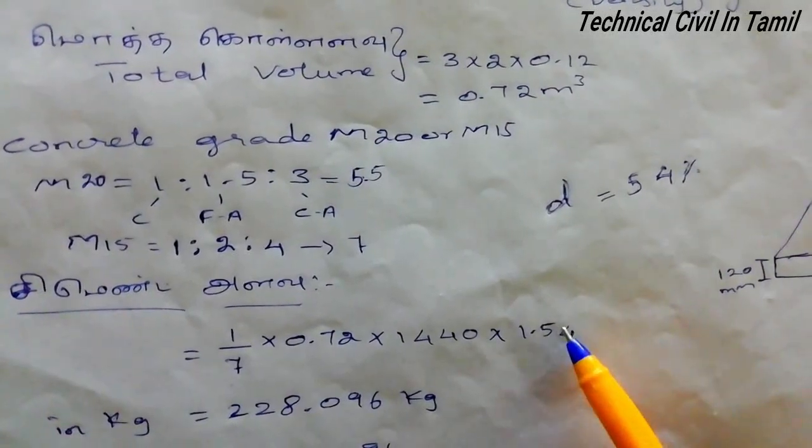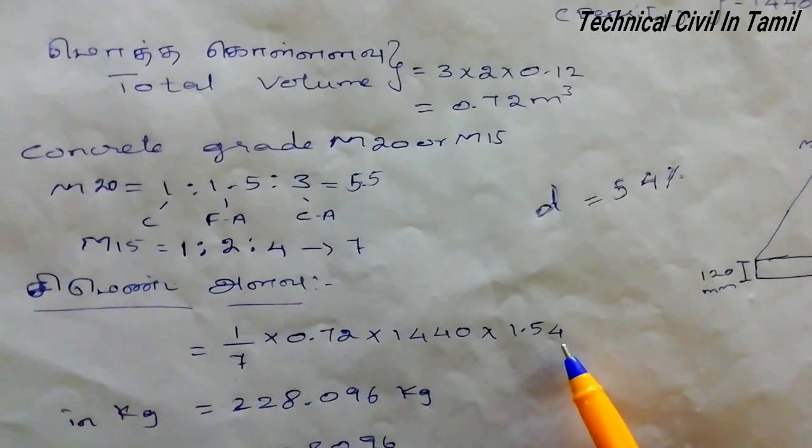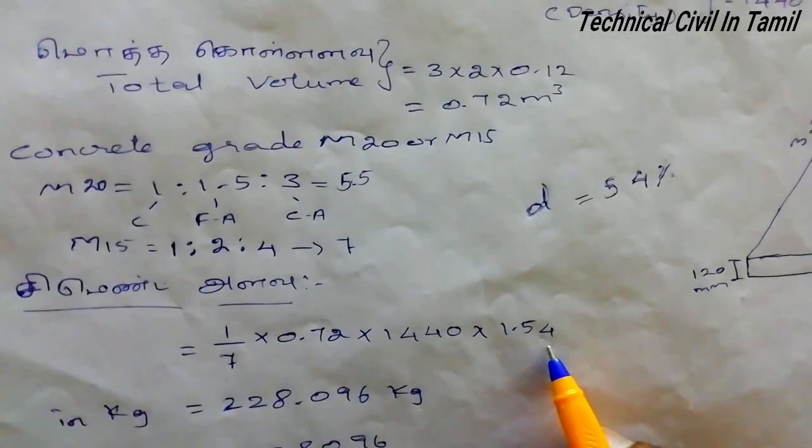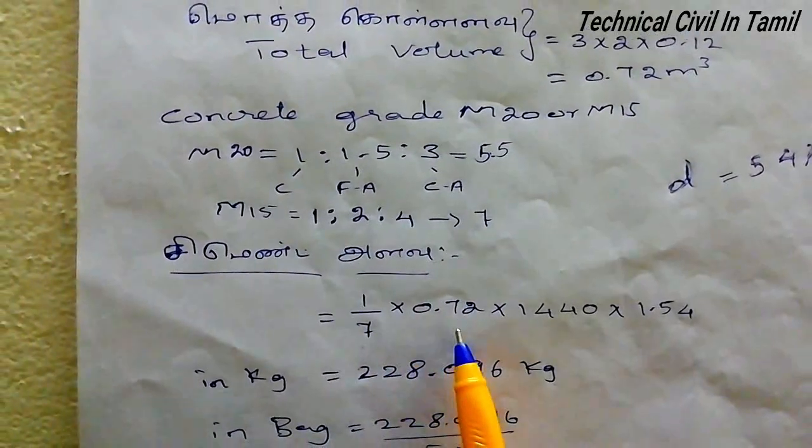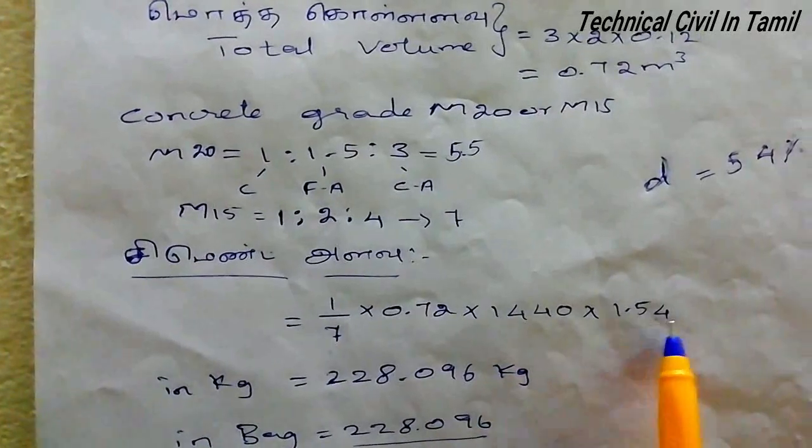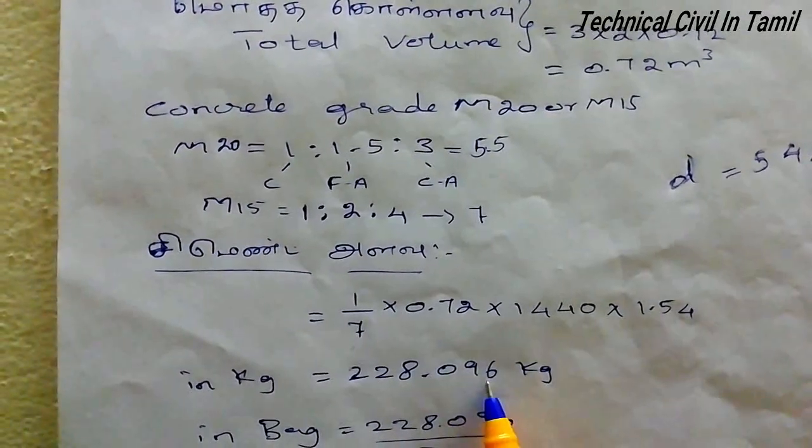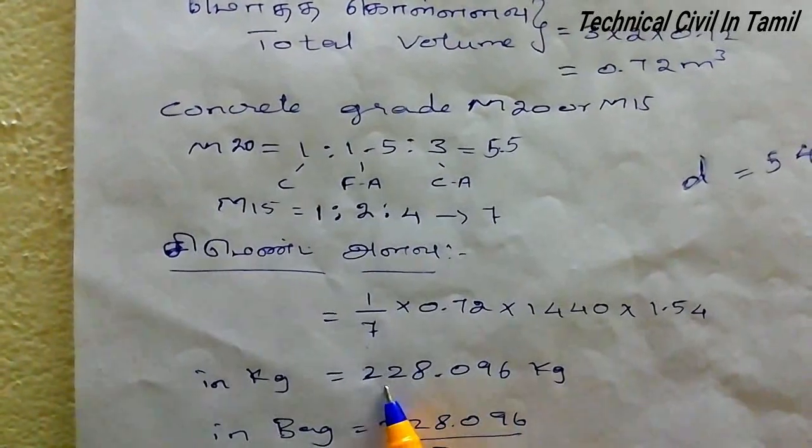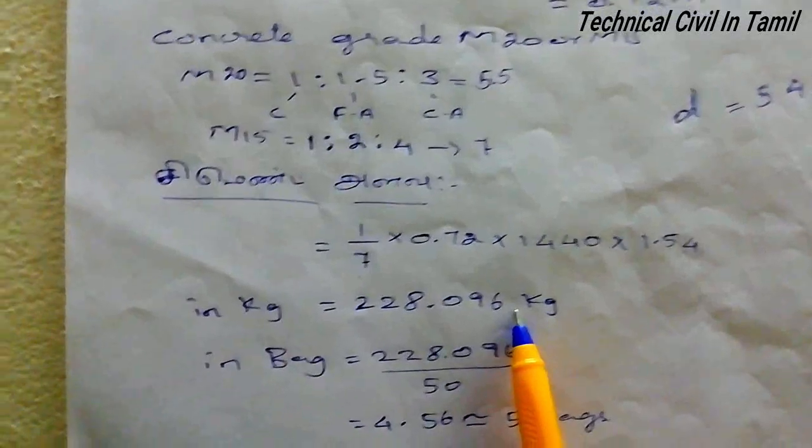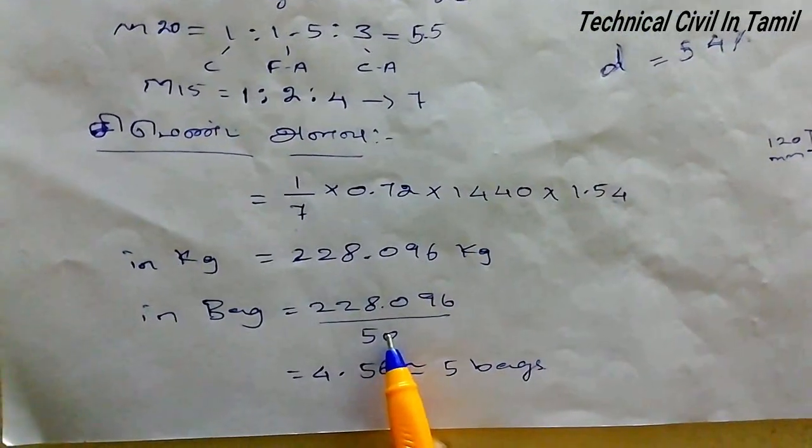So let's multiply: 0.72 divided by 5.5, then multiply by 1.54 for the density factor. We calculate this step by step.